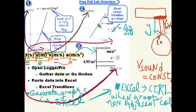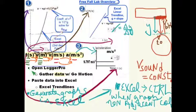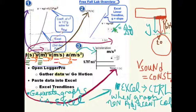To generate the velocity-time graph, block off the time column (column 1) and the velocity column. In Excel, depress and hold the Control key after blocking off the time column, then block off the velocity column. Then insert a scatter plot, and then insert a trend line — except this time it is a linear trend line. Once again, show the equation and R squared on the chart.